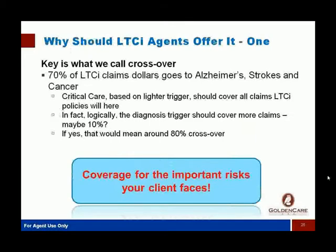Looking at this crossover: 70% of long-term care claims go towards Alzheimer's, strokes, and cancer. Critical care is based on a lighter trigger — all you have to do is be diagnosed, no activities of daily living problems required. Because it covers people sooner, my brother Mark estimated maybe we can throw another 10% on top for people who wouldn't have had coverage before — like for heart attack or early cancer. So we could be looking at about an 80% crossover of claims between the two products.